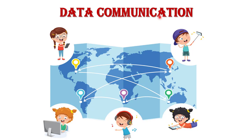The process involved in a communication system is made up of hardware and software. The hardware part includes the sender, receiver, and intermediate devices through which the data passes. The software part involves certain rules which specify what is to be communicated, how it is to be communicated, and when it is to be communicated — this is called protocols. With the help of hardware and software, all information can be transmitted from one point to another point in the world.